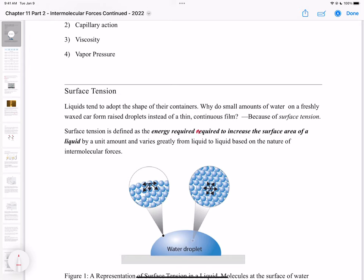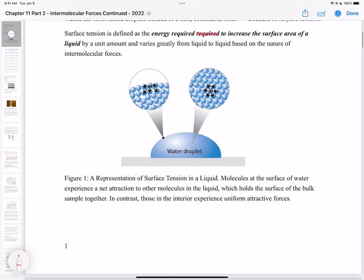Surface tension varies from liquid to liquid based on the nature of intermolecular forces. For a water droplet, molecules at the surface feel a net attraction to other molecules in the liquid, which holds the surface together and gives water its high surface tension.